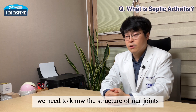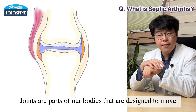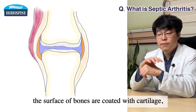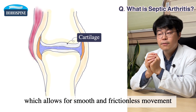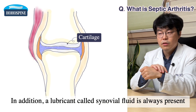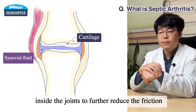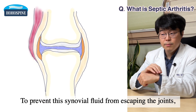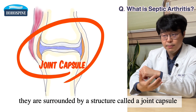we need to know the structure of our joints. Joints are parts of our bodies that are designed to move to minimize friction during movement. The surface of bones is coated with cartilage, which allows for smooth and frictionless movement. In addition, a lubricant called synovial fluid is always present inside the joints to further reduce friction. To prevent this synovial fluid from escaping the joints, they are surrounded by a structure called the joint capsule.